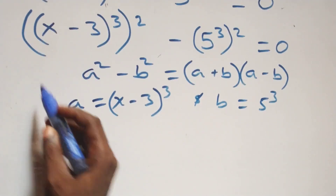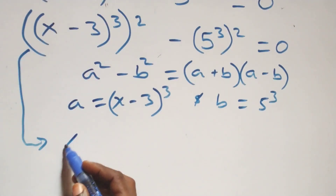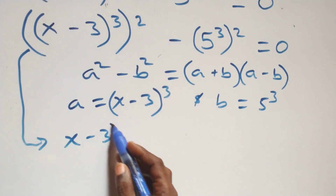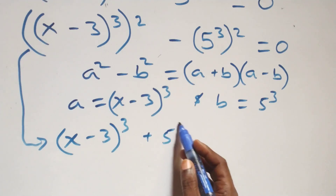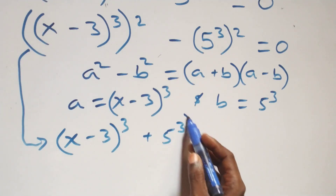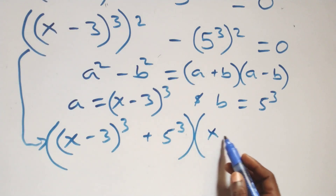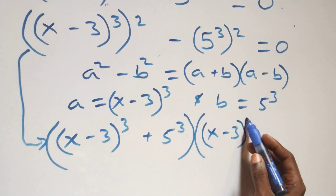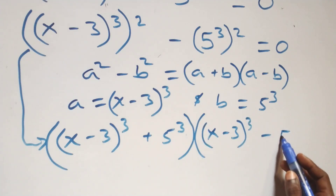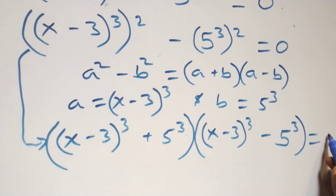Then what we have here, following this, it becomes: x minus 3 raised to power 3, plus 5 raised to power 3, into brackets, then also open brackets, x minus 3 raised to power 3, minus 5 raised to power 3, equals to 0 from here.